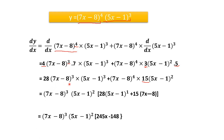Now solving further: 4 × 7 = 28, giving 28(7x − 8)³(5x − 1)³ plus (7x − 8)⁴ · 3 × 5 = 15, giving 15(7x − 8)⁴(5x − 1)². We can take (7x − 8)³(5x − 1)² as common. In the first term we are left with 28(5x − 1), and in the second term we are left with 15(7x − 8).